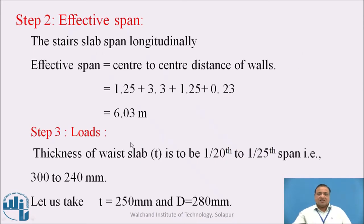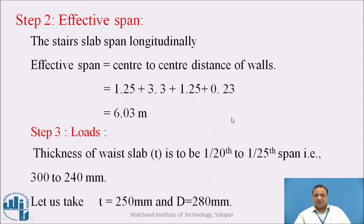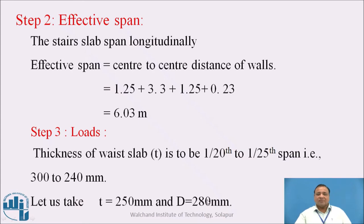The second step is to find the effective span. The stair slab is spanning longitudinally. Effective span is the center-to-center distance between the walls: 1.25 plus 3.3 going plus 1.25 plus half the wall thickness on each side, totaling 6.03 meter. The thickness of the waist slab is assumed from 1/28th to 1/25th of the span, which works out to be 300 mm to 240 mm. We take a thickness of 250 mm and overall depth of 280 mm.